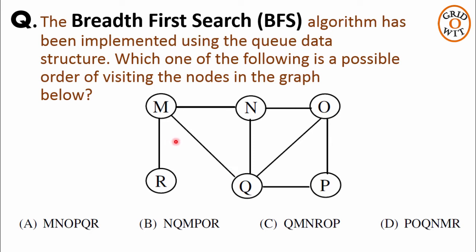As we all know, BFS graph traversal starts at some arbitrary node of the graph and explores the neighbor nodes first before moving to the next level of neighbors. That's why it is called level order graph traversal. Using this concept, we will try to answer this question directly.